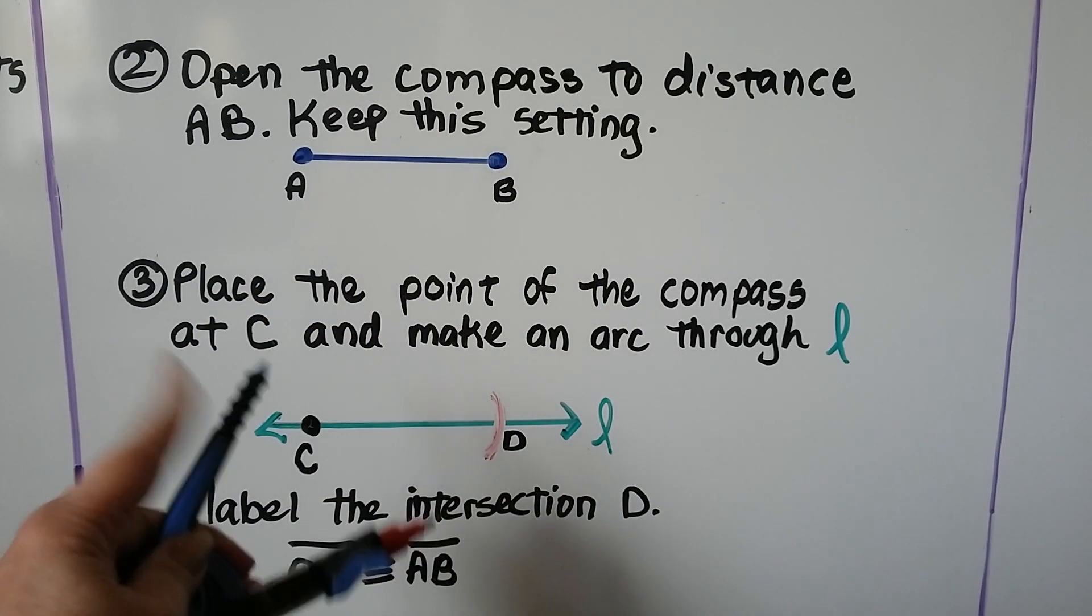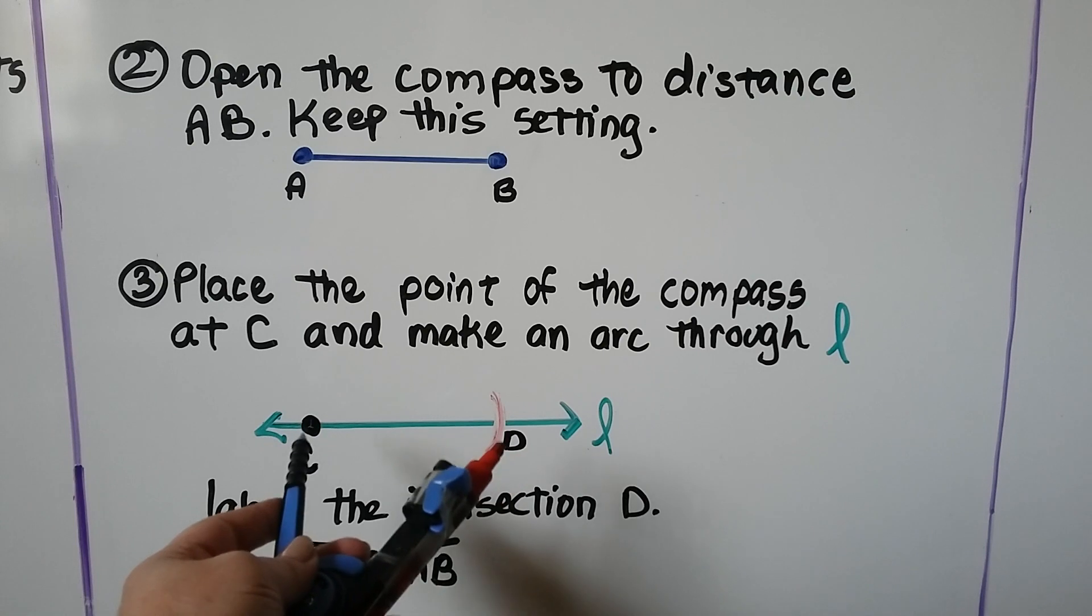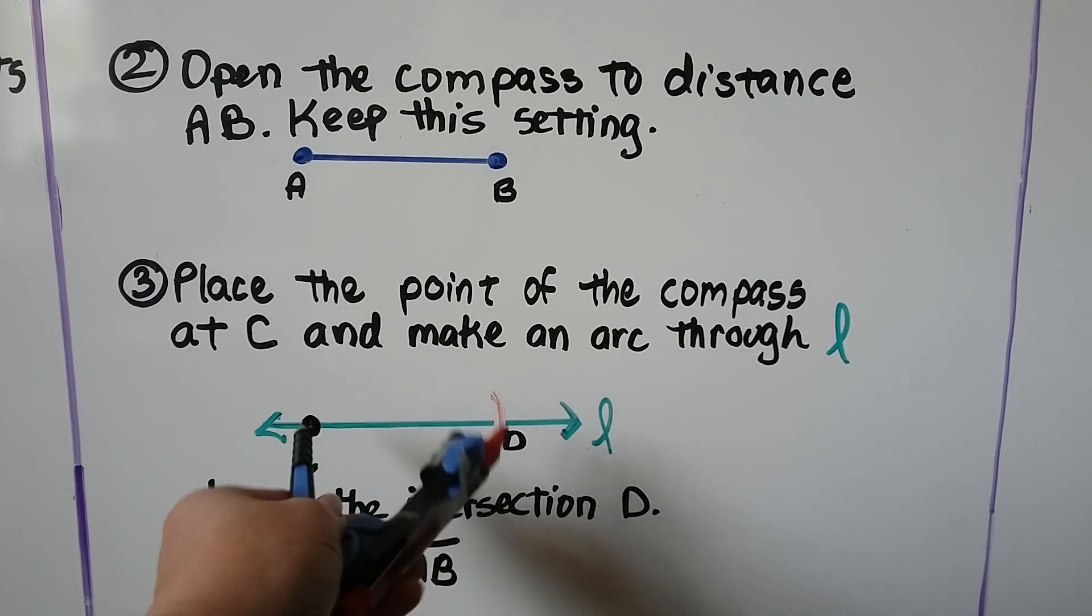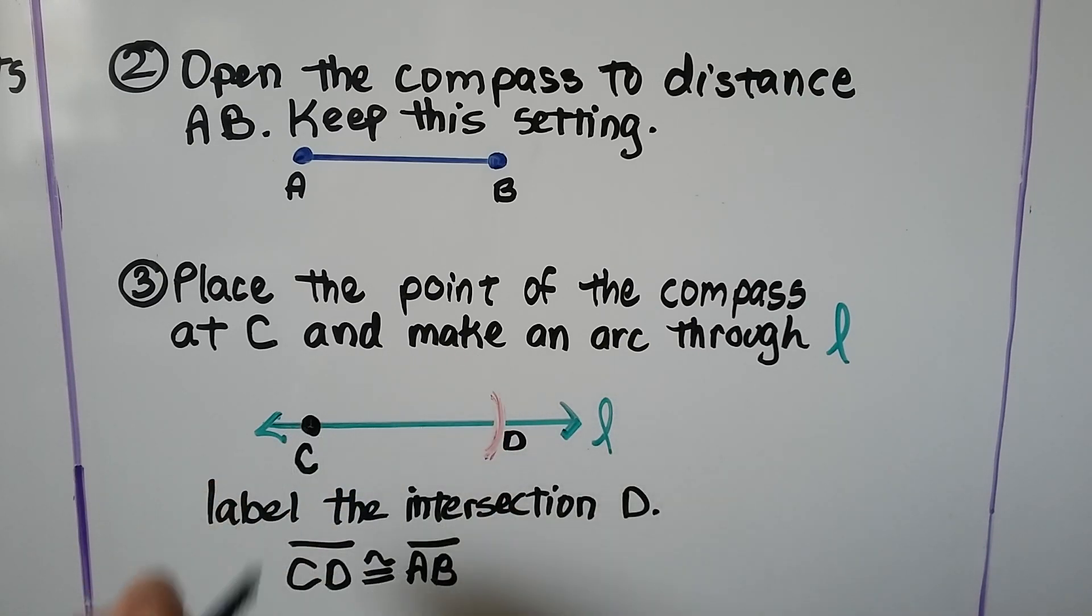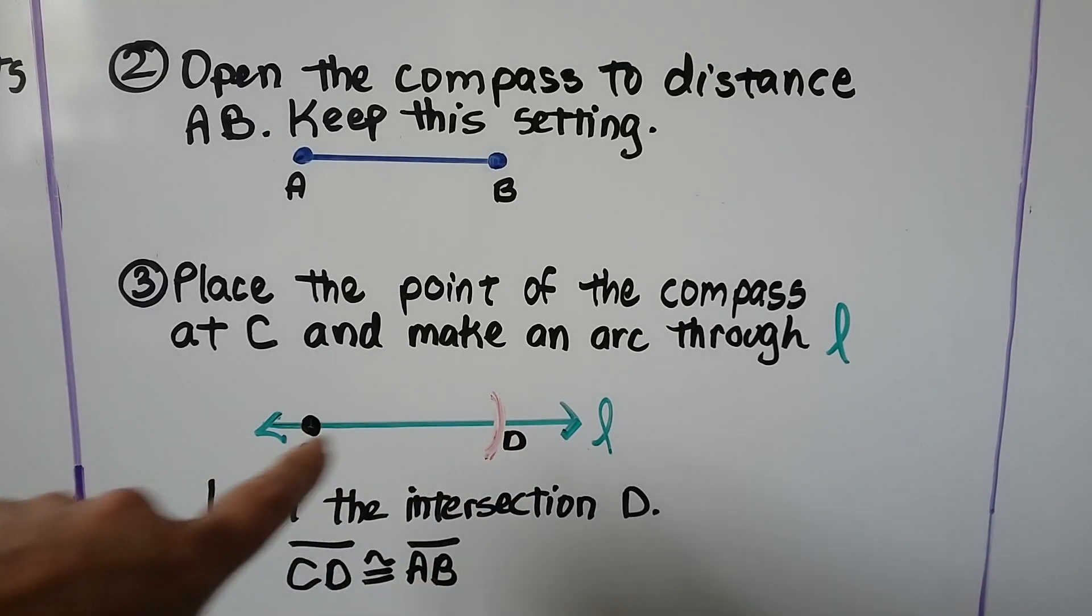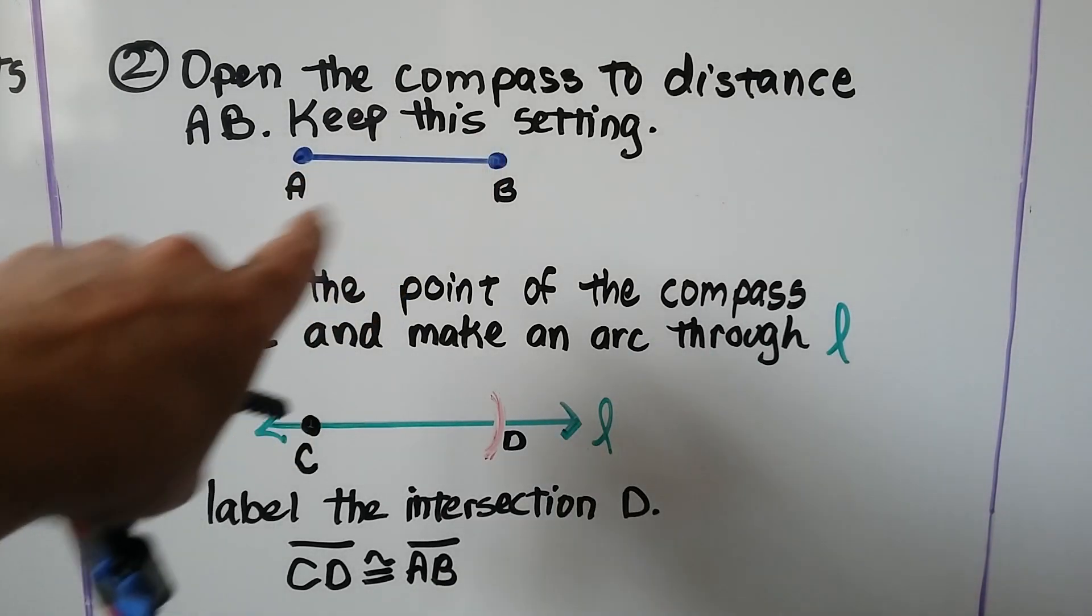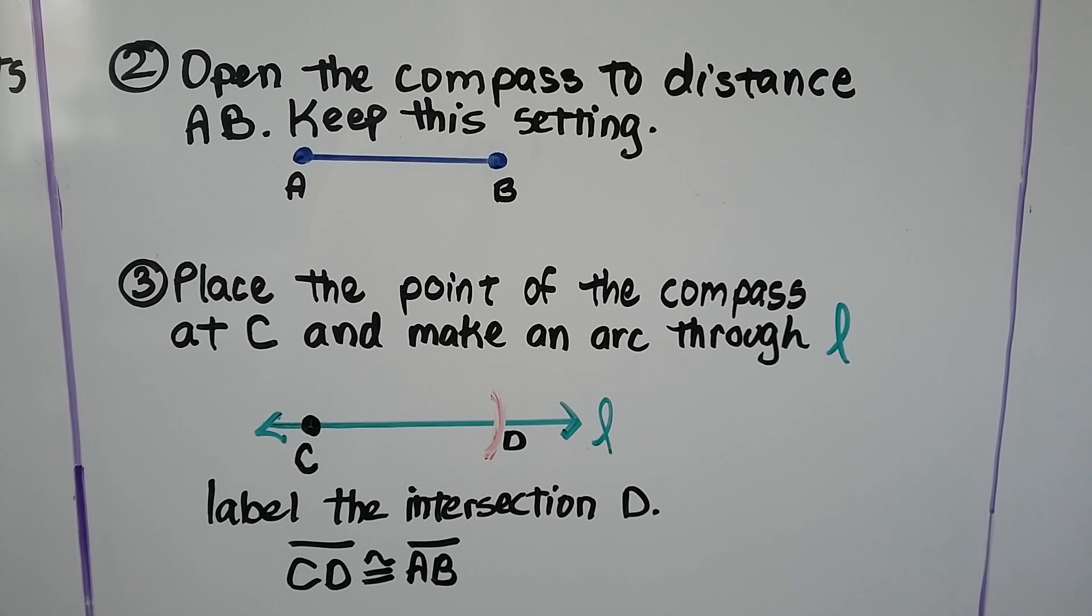We place the point of the compass at C and we make an arc on L. We can label this intersection D and this segment CD is congruent to segment AB. We've made congruent segments.